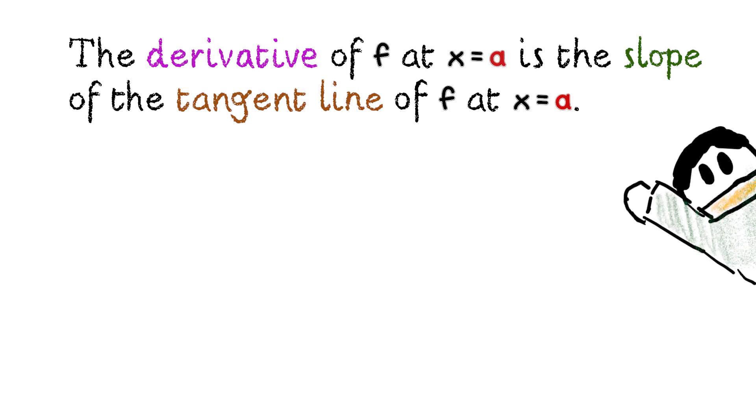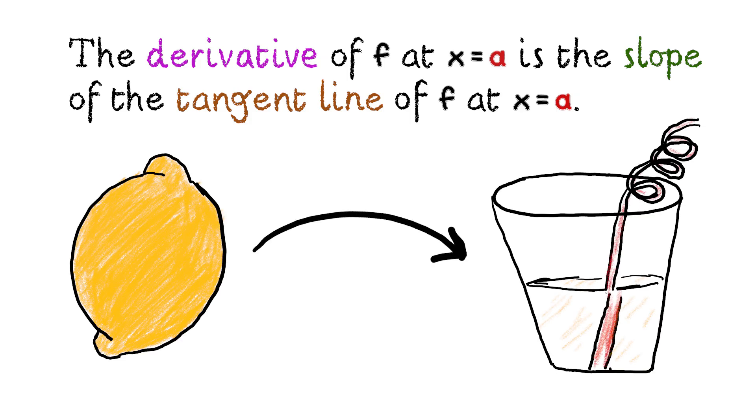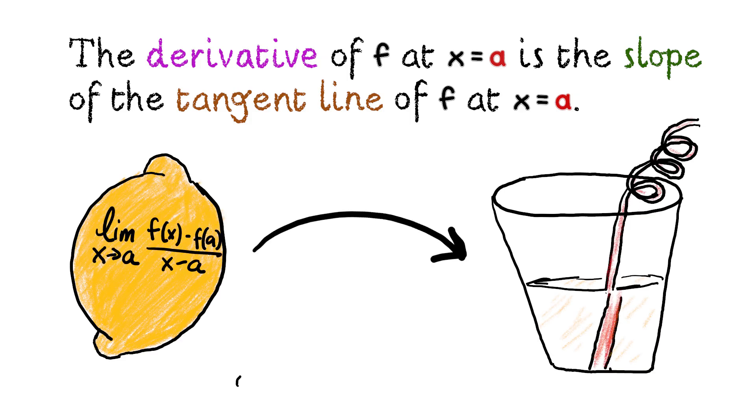So this statement that defines the derivative as a slope of the tangent is sort of like defining a lemon by what goes inside a lemonade, which if lemons look like this, I would understand.